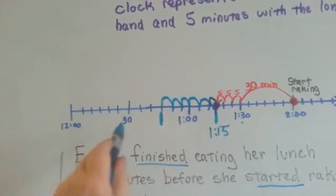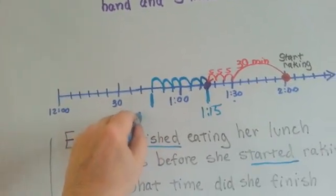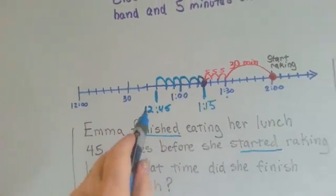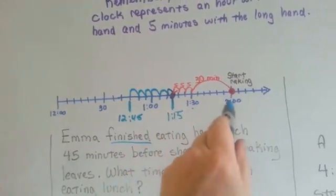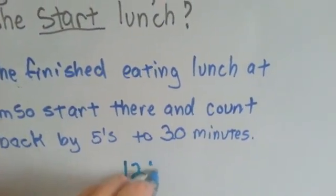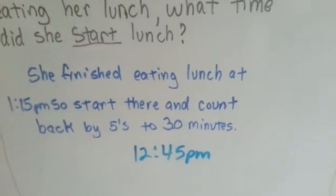12 o'clock, 12:30, 12:35, 12:40, 12:45. So we know she started eating at 12:45, she finished at 1:15, and started raking at 2 o'clock. See? We know her whole day for the schedule. She started eating her lunch at 12:45 p.m.